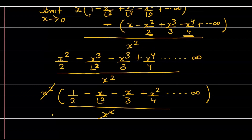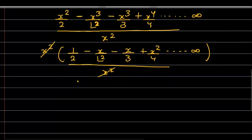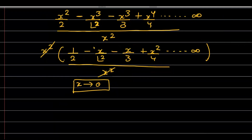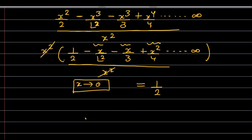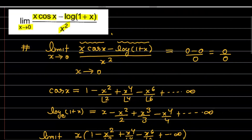You can see that x² in the numerator and x² in the denominator cancel. Now as x tends to 0, every remaining term still containing x — whether this quantity, that quantity, or any further variables generated — will have at least one x in them, and since x is tending to 0, all those terms convert to 0. So the limit of the given function is 1/2.